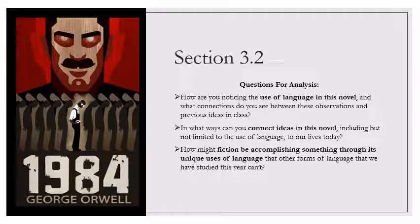But it did exist. It does exist. It exists in memory. I remember it. You remember it. I do not remember it, said O'Brien. Winston's heart sank. That was doublethink. He had a feeling of deadly helplessness. If he could have been certain that O'Brien was lying, it would not have seemed to matter. But it was perfectly possible that O'Brien had really forgotten the photograph. And if so, then already he would have forgotten his denial of remembering it and forgotten the act of forgetting. How could one be sure that it was simply trickery? Perhaps that lunatic dislocation in the mind could really happen. That was the thought that defeated him.